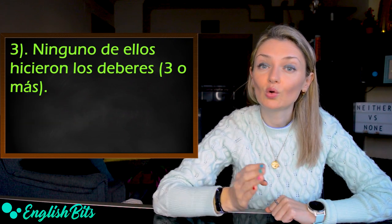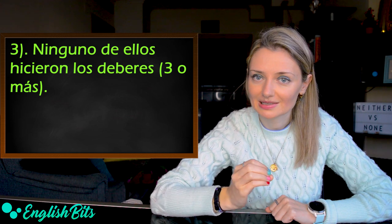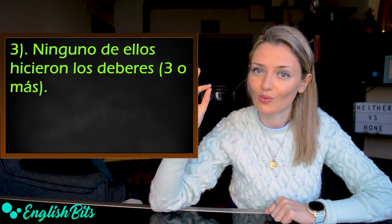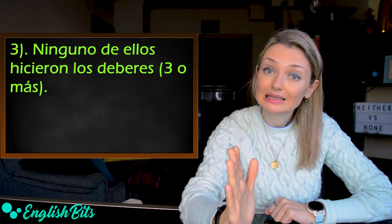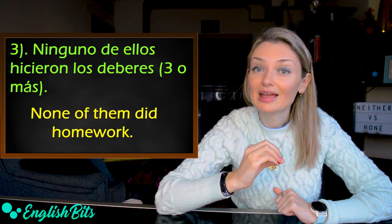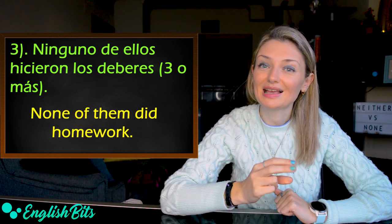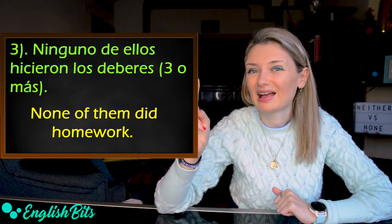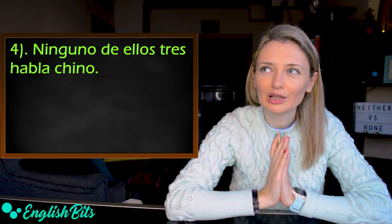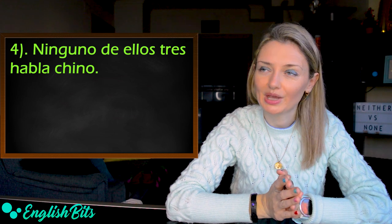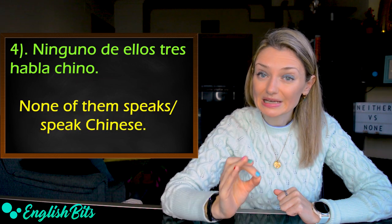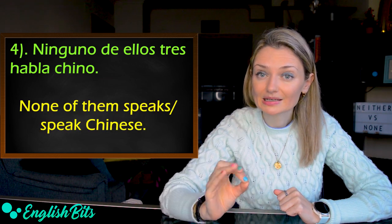So translate this sentence. And now I'm going to give you the correct sentence: neither of them knew what to do. The third sentence: ninguno de ellos hicieron los deberes. In this case, we talk about three or more people. So once again, pause the video if you need and write down the sentence. And the correct sentence would be: none of them did homework. So in this case, we have to use none of them and not neither because we've got three or more people. Number four: ninguno de ellos tres habla chino. So here we've got three people. The correct sentence is: none of them speaks, or we can also say speak Chinese.